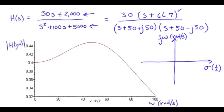And the numerator tells us where zeros are located. So we have a zero at minus 66.7 on the real axis. Then look at the denominator for the poles. So that says we have poles at minus 50 for the real part. And then plus 50. And minus 50.